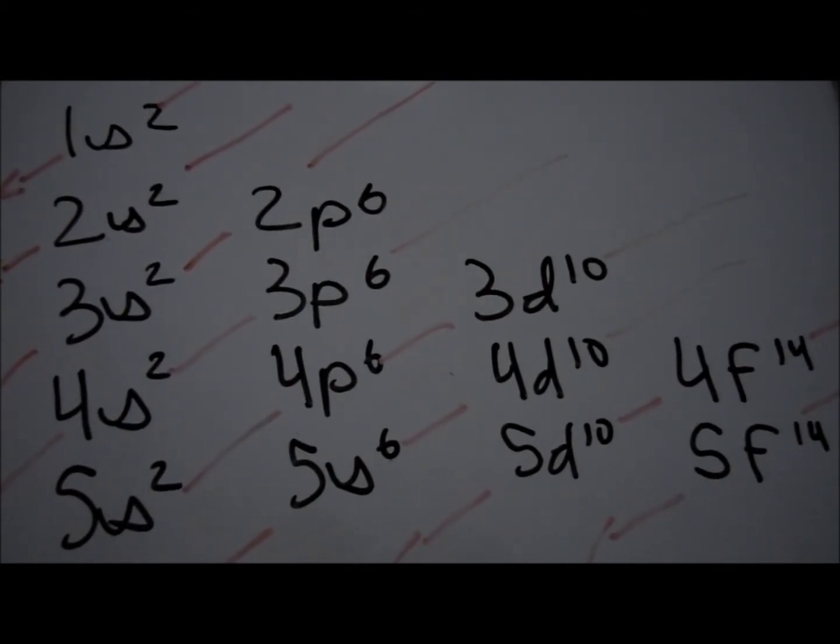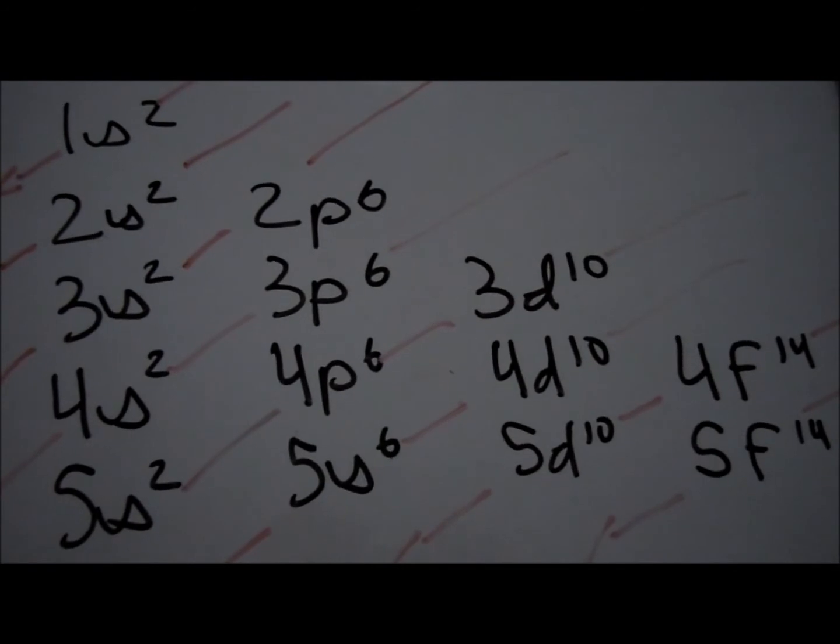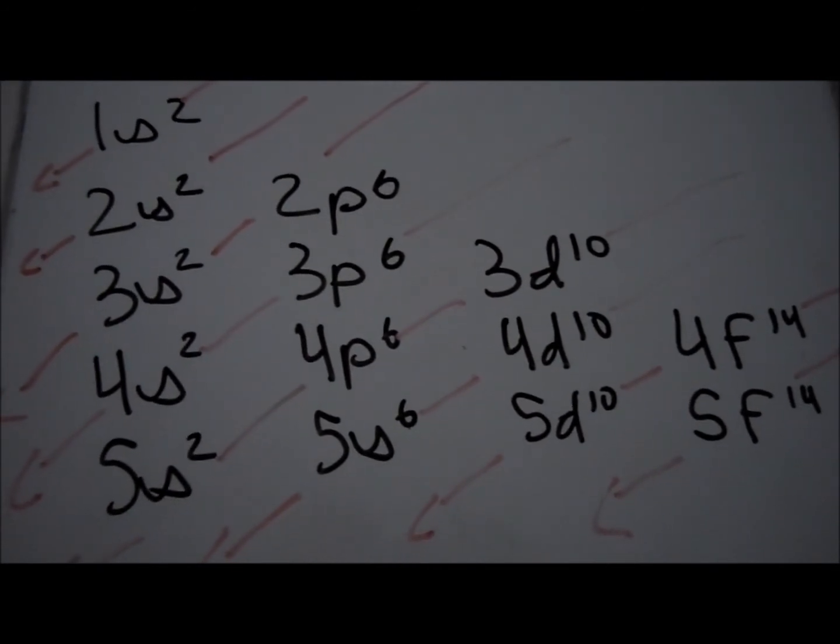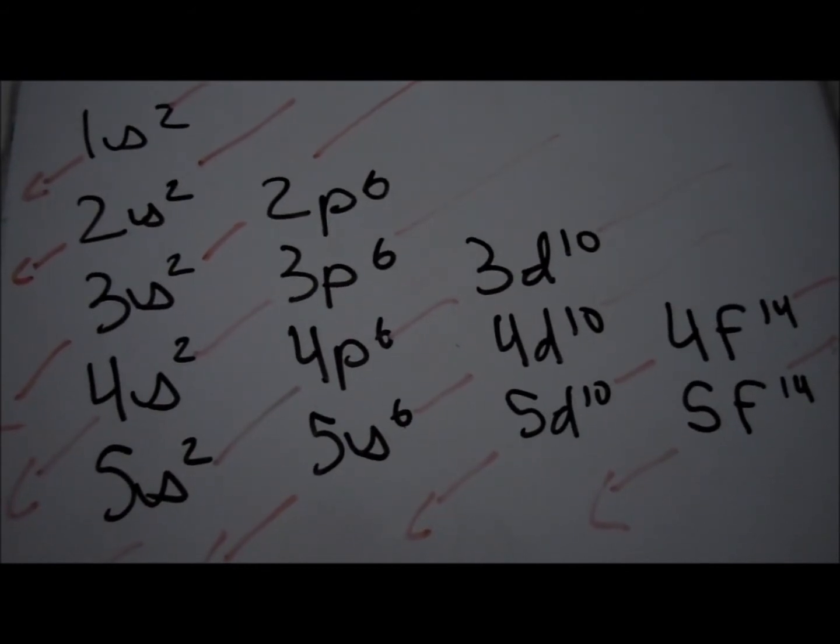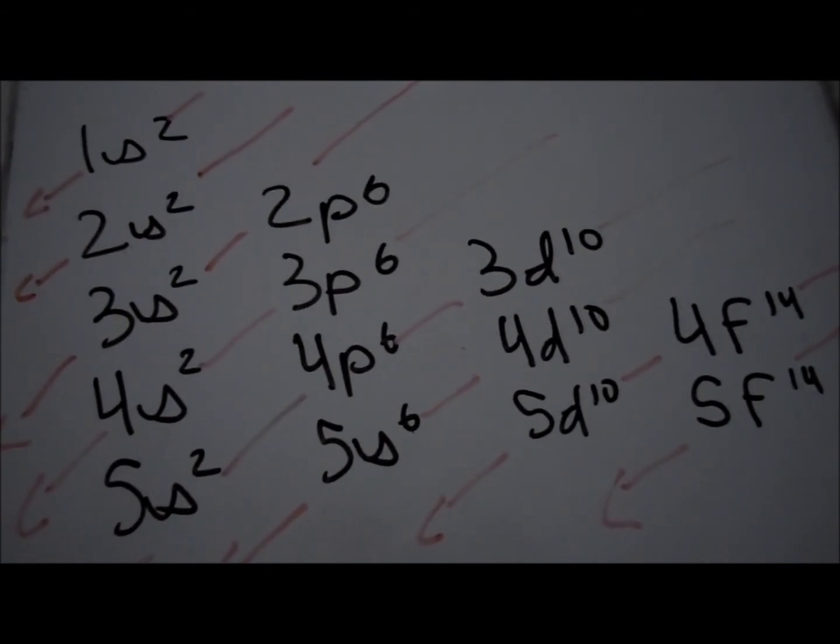Keep in mind that the p orbital only comes in the second row, d in the third, and so on. Also, s orbitals can only hold two electrons, p orbitals can hold six, d can hold ten, and f can hold fourteen.